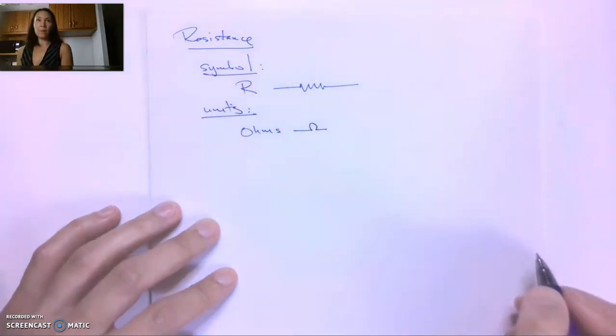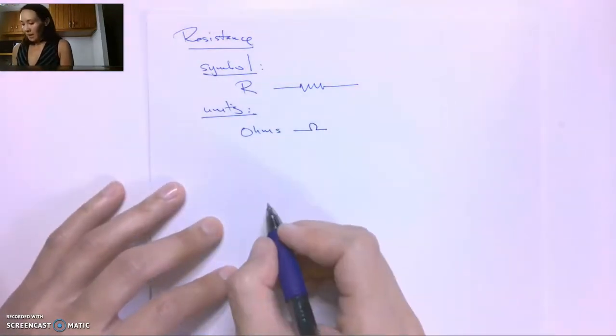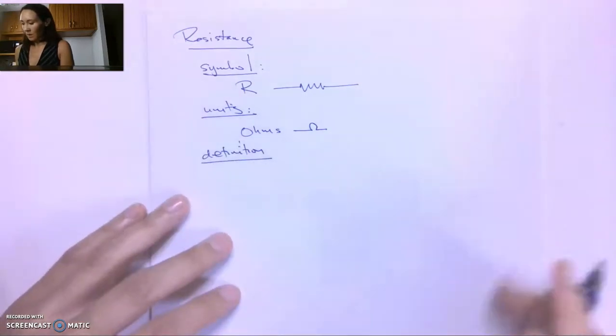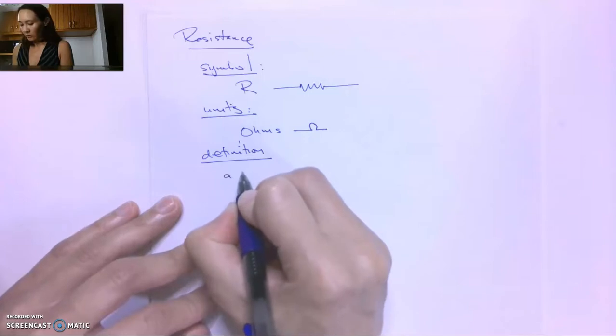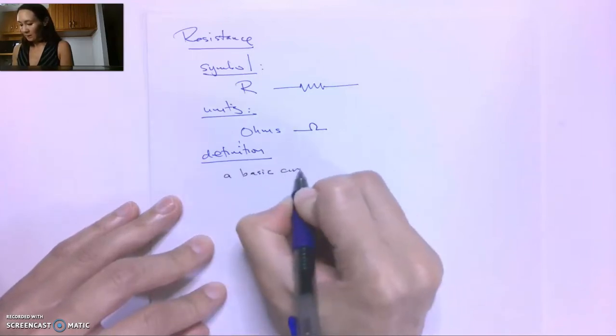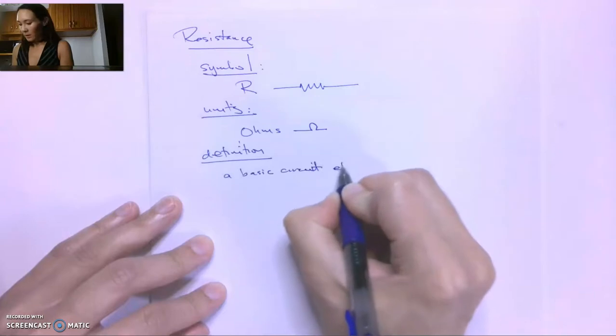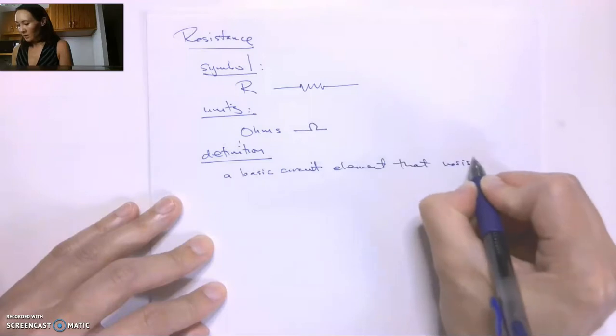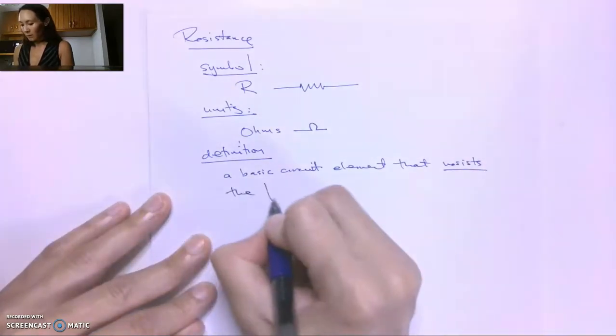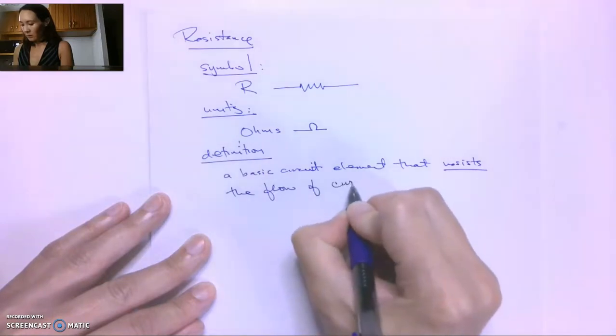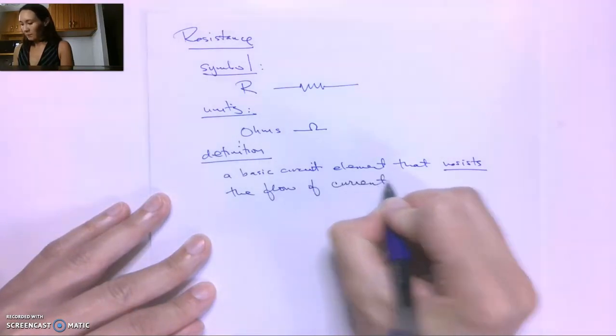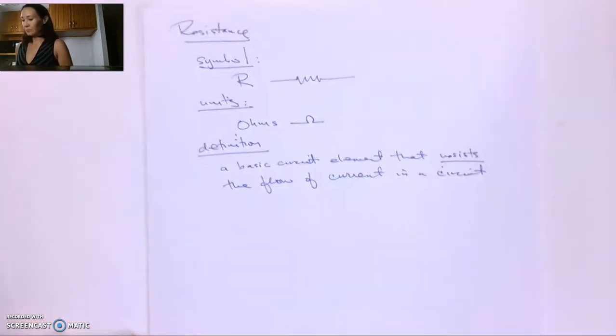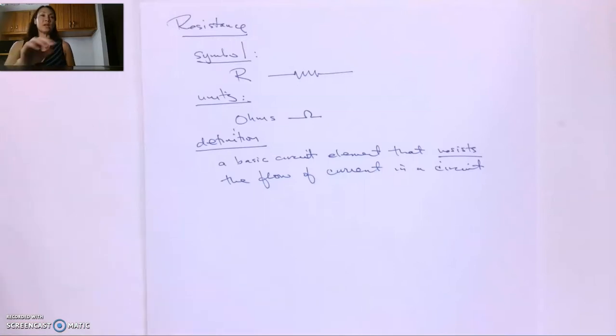And the symbol is a capital omega like this. And like I said, the definition of resistance is, for us, we'll just say it's a basic circuit element that resists the flow of current in a circuit. All right, that is current, voltage, and resistance.